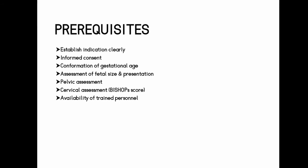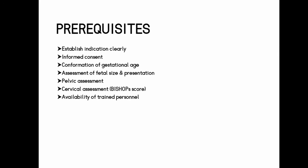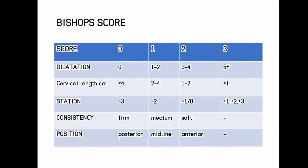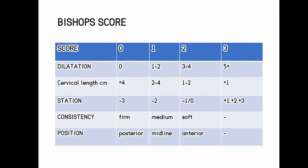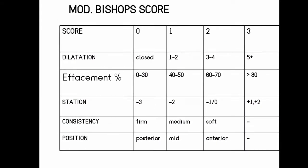To establish informed consent, confirm gestational age, confirm fetal size and presentation, and perform pelvic and cervical assessment. The Bishop score is used for cervical assessment. The Bishop score is modified — it assesses cervical length.